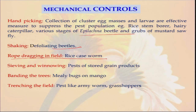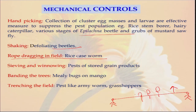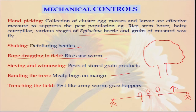Rope dragging is done in case of rice case worm. We take a very big rope and two persons — one on each side — drag this rope along the rice field. Most case worms and insects will fall in the water, and when the water is drained, the insect population will be less. Similarly, banding the trees — in case of mango trees, if there is a lot of mealy bug, what we do is apply some type of coating material on the stem so the insects cannot move. This also reduces the mealy bug of mango significantly.